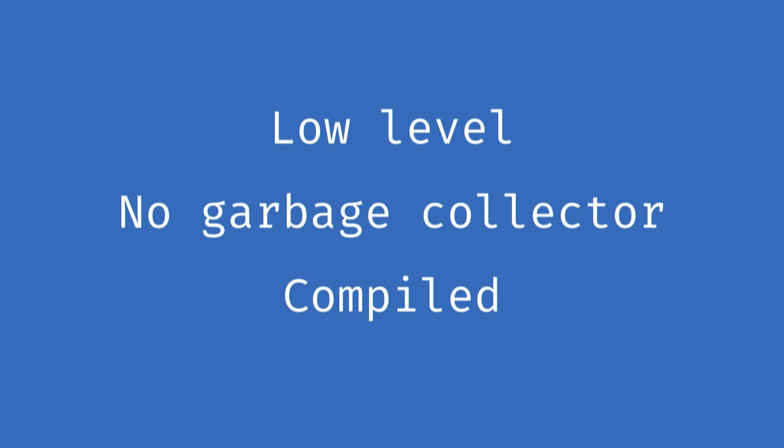Those guarantees come at a huge price. The language is low level — you can basically write an operating system in it. There is no garbage collector, and it's compiled. But with the rise of Google's Go language, all these things which would have been a no-go for a new web project are now strengths. Even though Rust has no garbage collector and it's compiled, you don't need to manage memory by hand — it's all done by the compiler, magically. That magic is accomplished with only four principles: results and options, then ownership, borrowing, and lifetimes.